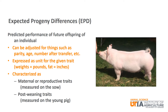EPDs are predictions of the performance of future offspring from individual animals. They can be adjusted for parity, age, and number after transfer, among others. Parity refers to the number of times a given sow has farrowed or given birth. Number after transfer refers to the number of pigs the sow is nursing after the litter has been standardized, typically done within 24 to 48 hours after farrowing.